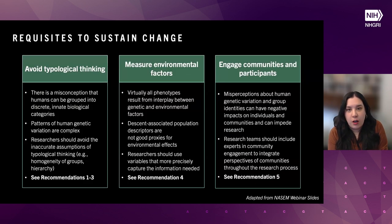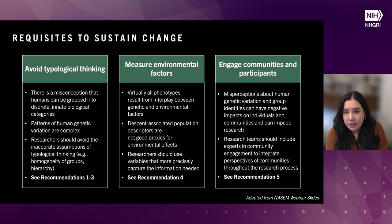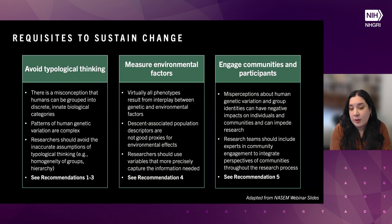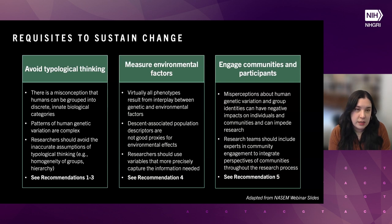The three requisites fall into these categories. First, to avoid typological thinking — the misconception that humans can be grouped into discrete, innate biological categories, when in fact human genetic variation is very complex. These are addressed by recommendations one through three. Second, to measure environmental factors, since virtually all phenotypes result from both genetics and environment, and descent-associated descriptors are not good proxies for environmental effects. Recommendation four addresses this. Third, to engage communities and participants, as misperceptions about human genetic variation can cause real harm and need to be addressed — recommendation five.